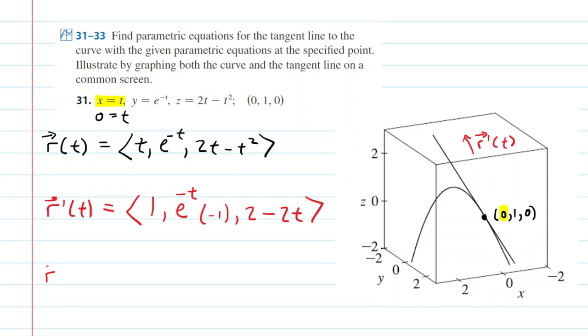So we're just going to plug in 0 for t. So here we go. So we're going to have, for the x component, 1. And then we have e to the 0, which is 1, but then multiplied by negative 1 is negative 1. And then over here, we plug in and we get 2 minus 0, so that's just 2. So this is our tangent vector.